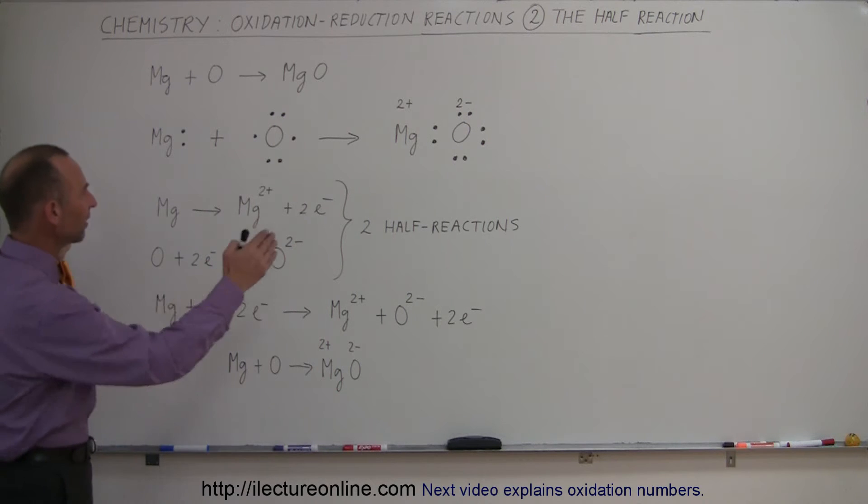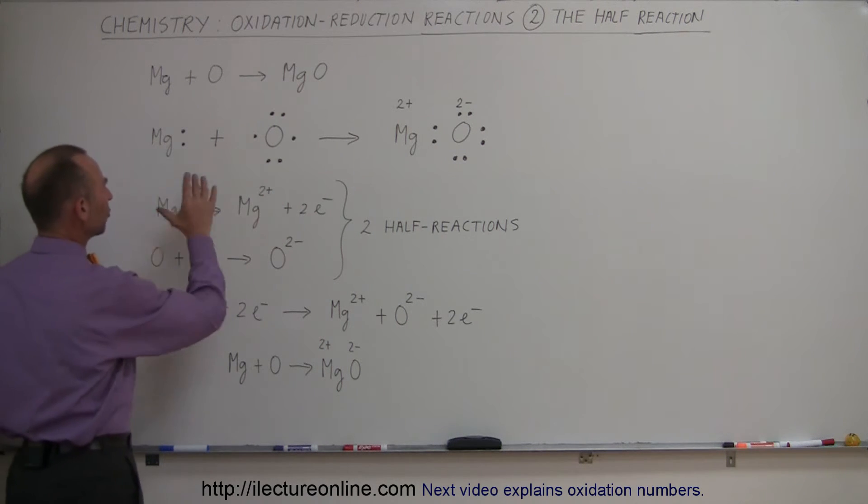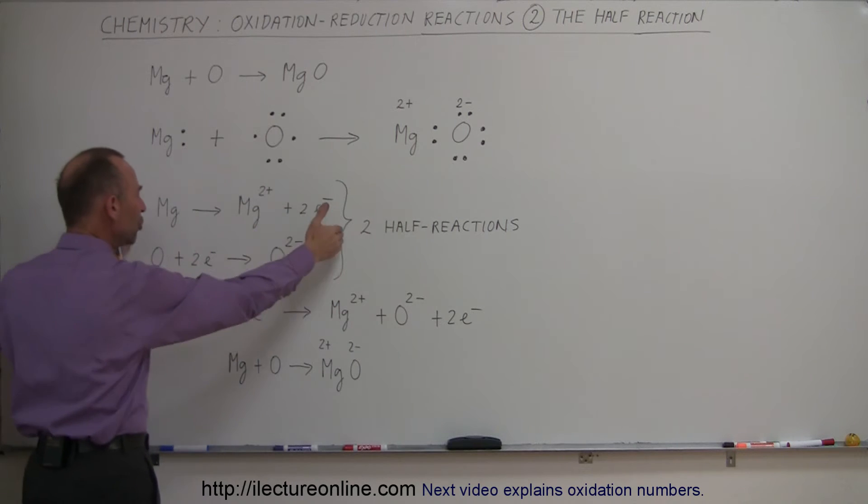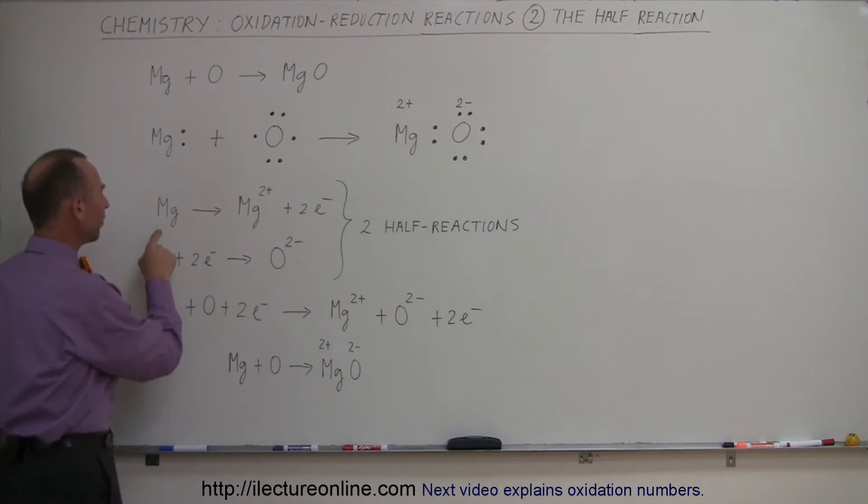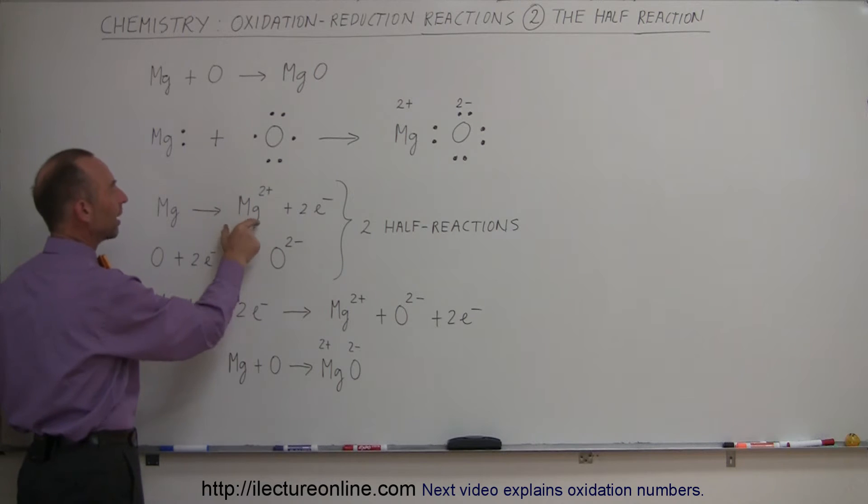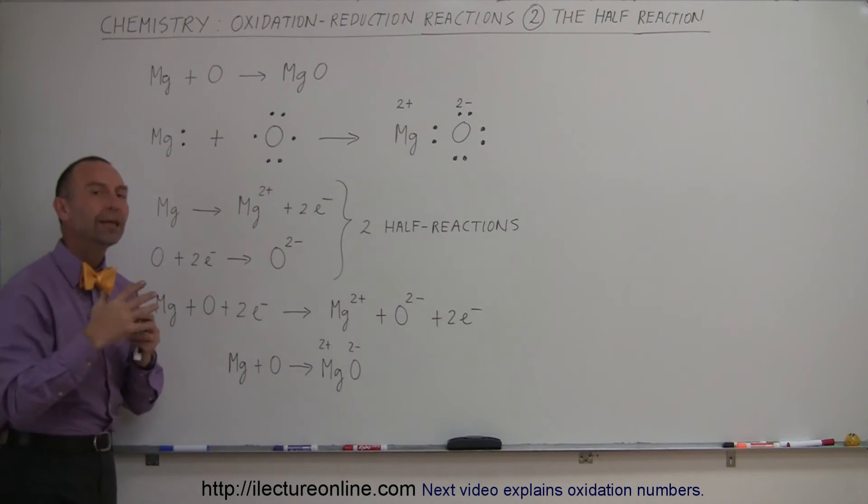Now, we can represent this whole reaction, oxidation reduction reaction, in two half reactions. In the first half reaction, we have magnesium that donates two electrons. So, we show that here that magnesium changes to magnesium ion, a two plus ion, with two electrons being donated.